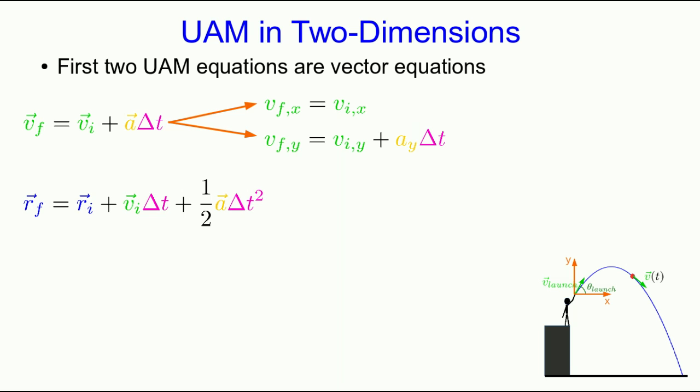In the second equation, that acceleration is plus or minus g, and I'm saying plus or minus because it depends on which way you've oriented your y axis. Similarly, the second equation separates out into two component equations, and once again the acceleration part drops out of the x component of the equation, and in the y component we know that acceleration is either plus or minus g.